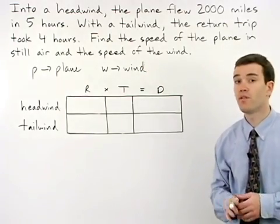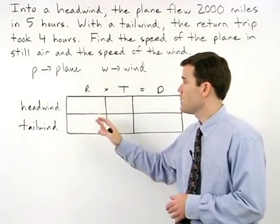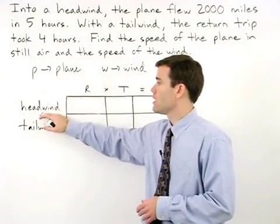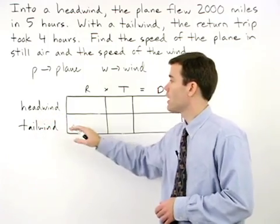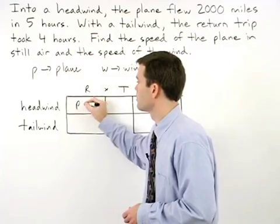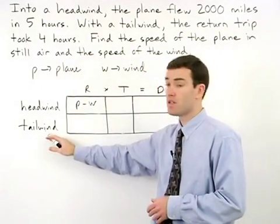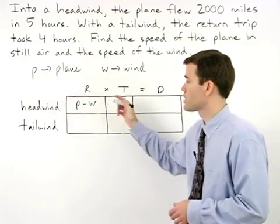then remember from the previous example that we can represent the speed of the plane into a headwind as p minus w and the speed of the plane with a tailwind as p plus w.